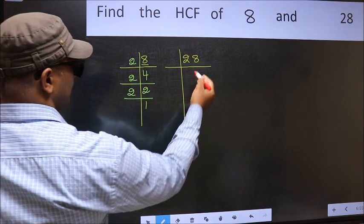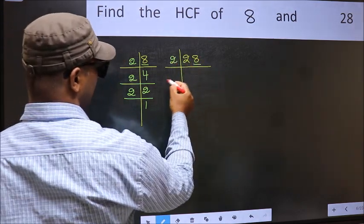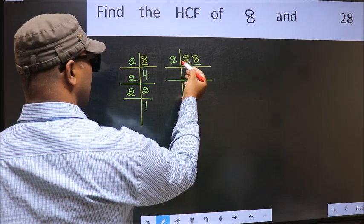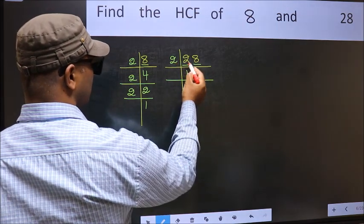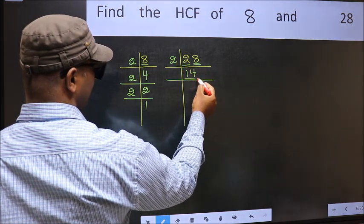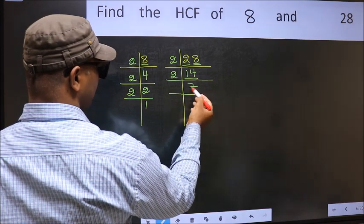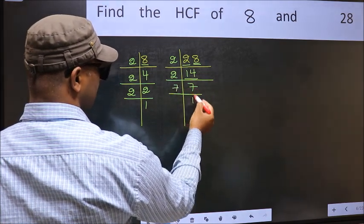Now the other number. Last digit 8, even, so take 2. First number 2, when do we get 2 in the 2 table? 2 times 1 is 2. The other number 8, when do we get 8 in the 2 table? 2 times 4 is 8. Now 14 is 2 times 7. 7 is a prime number, so 7 times 1 is 7.